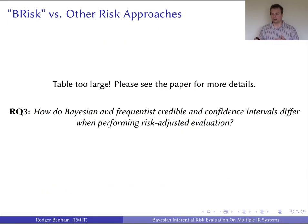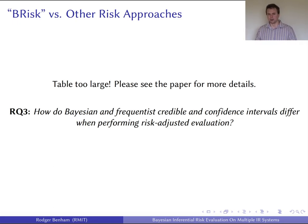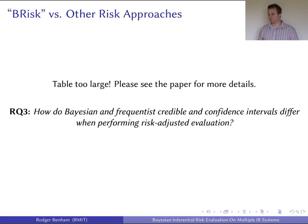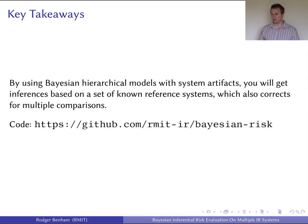For research question three, the Bayesian risk approach is more conservative in the inferences it provides, purely because it can only base inferences on what is known about system models rather than the entire hypothetical population of different scores. There's no harm in combining frequentist inferences with Bayesian inferences — in fact, they're complementary. The key takeaways are: by using Bayesian hierarchical models with system artefacts, you get inferences based on a set of known reference systems, which also corrects for multiple comparisons as part of the Bayesian hierarchical pooling process. The code is available on GitHub for use in your own research. Thank you for watching.